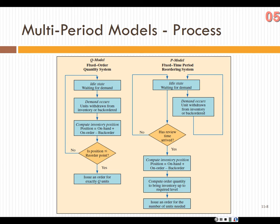Looking at the process difference: in the Q model, we wait for demand, withdraw from inventory or backorder if needed, compute our inventory position, check if it's at the reorder point — if not, we wait; if yes, we issue an order for our economic order quantity. In the fixed time period model, we're in an idle state, demand occurs and is withdrawn or backordered, and that cycle continues until the review time arrives. Then we compute our position, determine how much we need to order, and order based on how much was used since the last order.